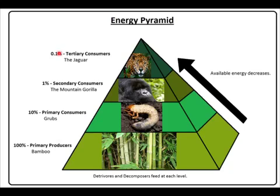The top level is the tertiary consumers — these are the top of the food chain and they have the least available energy. That's why there are fewer tertiary consumers than there are primary consumers.